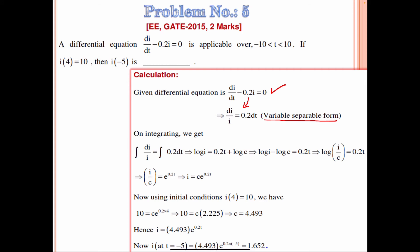On integrating, we get log i = 0.2t + log c, which gives log(i/c) = 0.2t, so i = c e^(0.2t). Using the initial condition i(4) = 10: 10 = c e^(0.2×4) = c e^(0.8). So c = 10 / e^(0.8) ≈ 4.493.